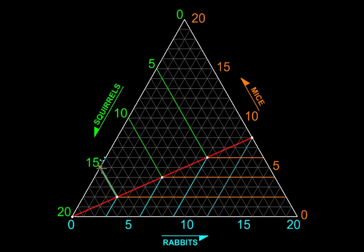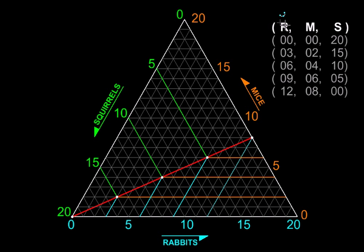Like that we can read off every solution. So here are the population mixes of rabbits, mice, and squirrels. So we have one, two, three, four, and five solutions.